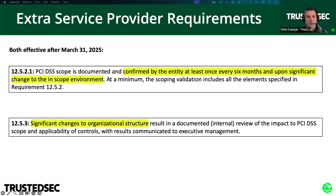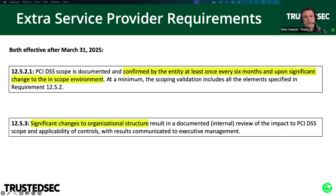If you're a service provider, there are two brand new requirements related to 12.5.2, both effective after March 31, 2025. First, service providers must do this validation every six months, not every 12 months. Second, they must do a scope review after any significant changes to organizational structure, and that scope review must be documented. This is above and beyond the standard 12.5.2 responsibility — you've also got to document what changes to your org chart mean for your PCI responsibilities and applicable controls.